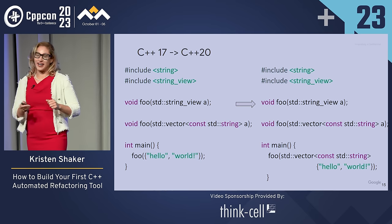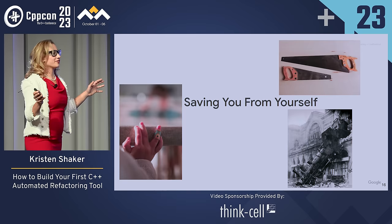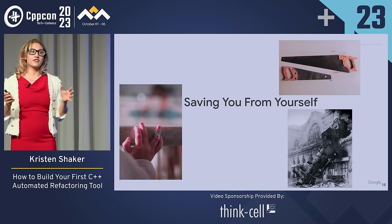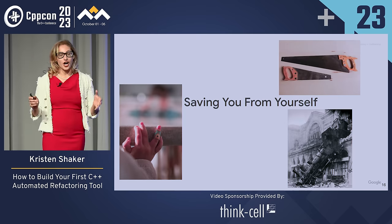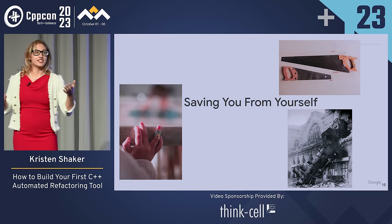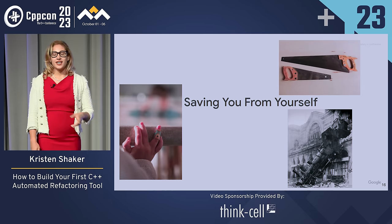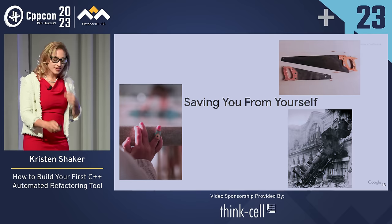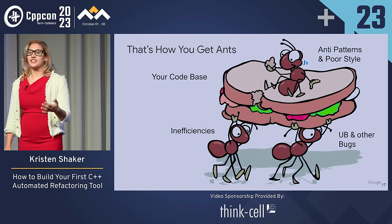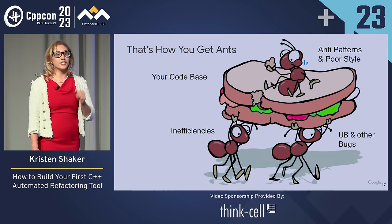One of my favorite use cases of these refactoring tools is saving us from ourselves. C++ has tons of sharp edges. Some of your language experts might know them, but you have a ton of non-expert C++ programmers at your company, and you're constantly onboarding new ones. You want to scale the knowledge of your experts as your company grows without necessarily scaling the size of your expert team. If we're not extremely proactive about preventing bad code from being committed, it will accumulate and cause technical debt — and that's how you get ants. So we build refactoring tools to stop anti-patterns, poor style choices, undefined behavior, and other bugs from ruining the picnic that is our codebase.